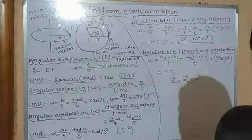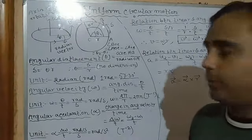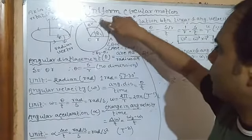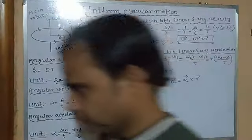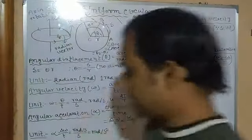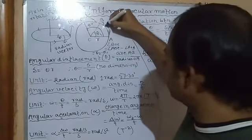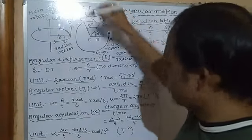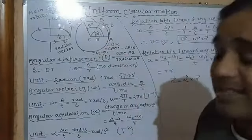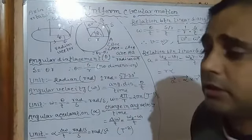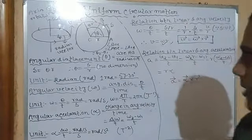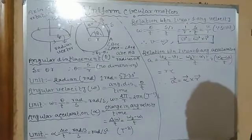This motion is called accelerated because at each point the direction of motion keeps changing. So since the direction of velocity keeps changing, that is why it is accelerated motion. In class 10 you learnt up to this point. But here we will learn something in more detail.